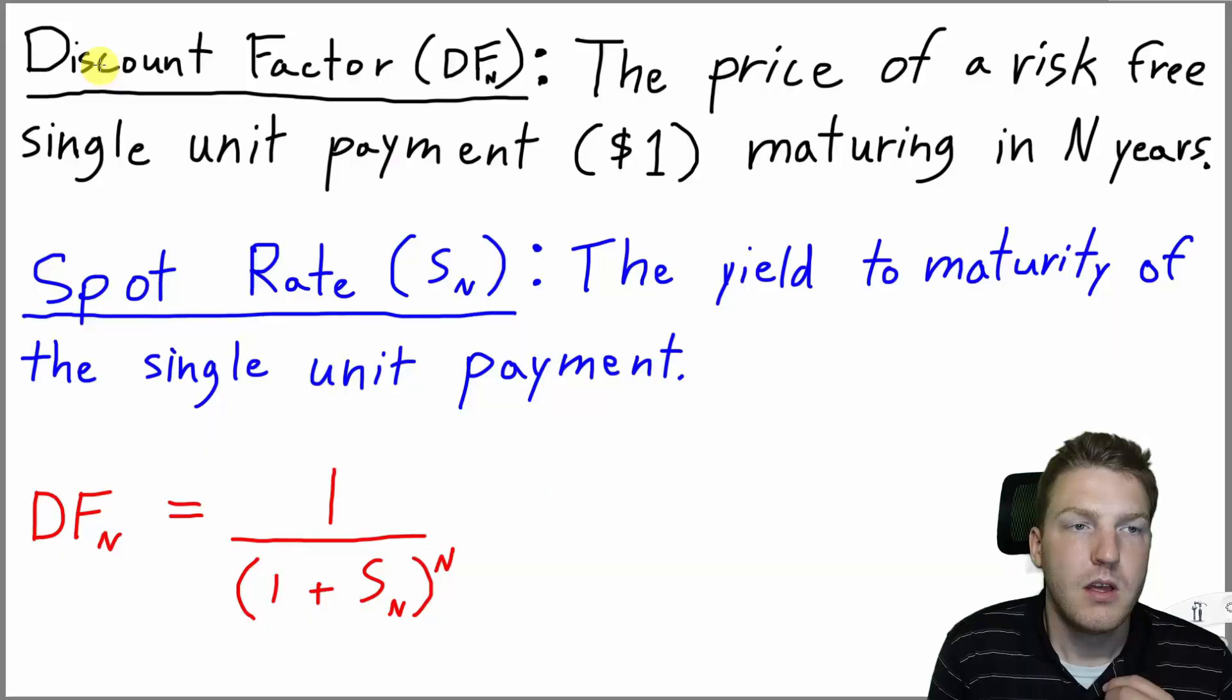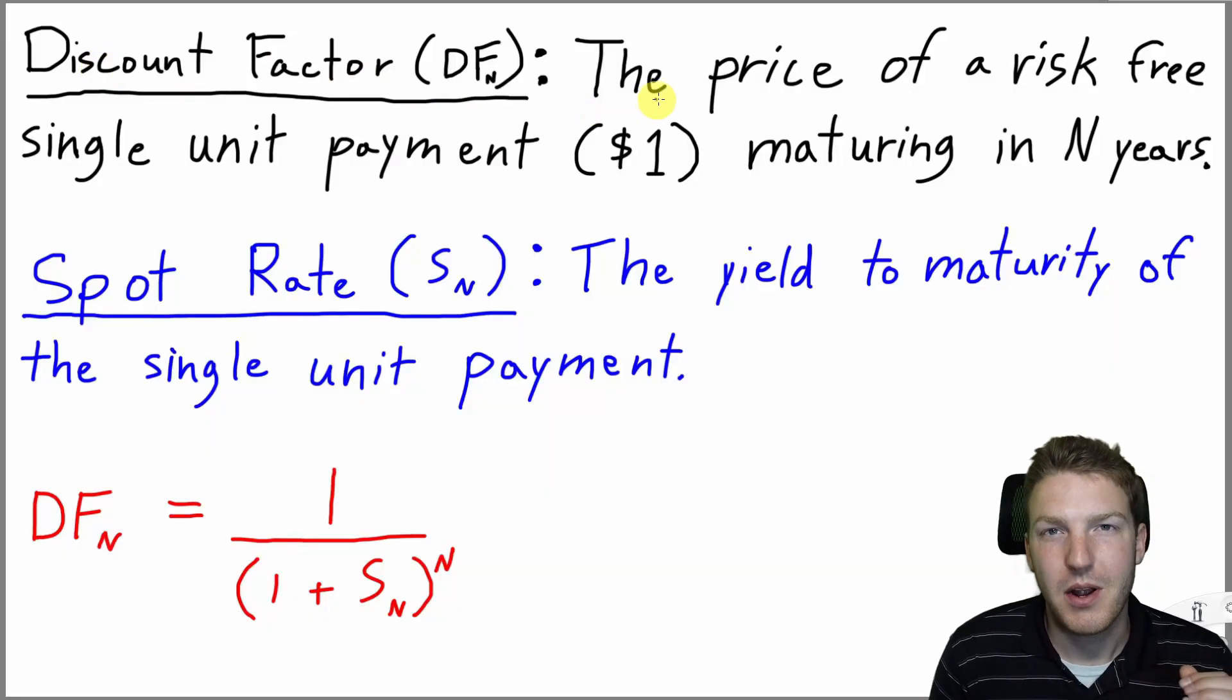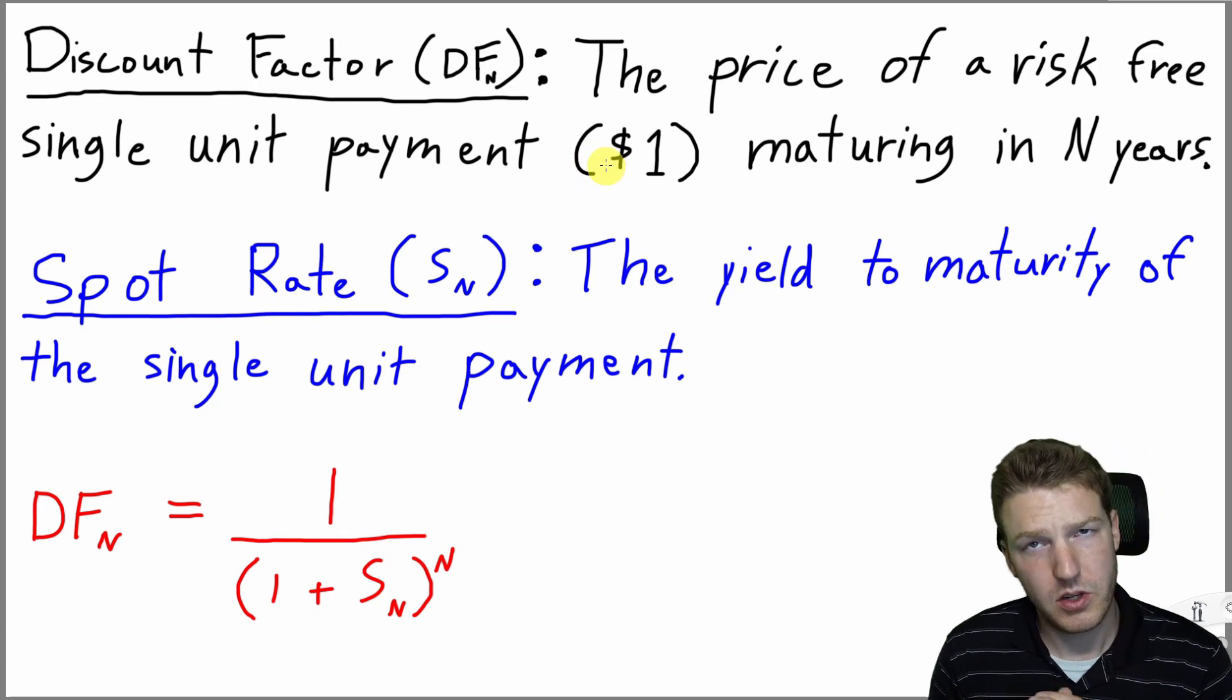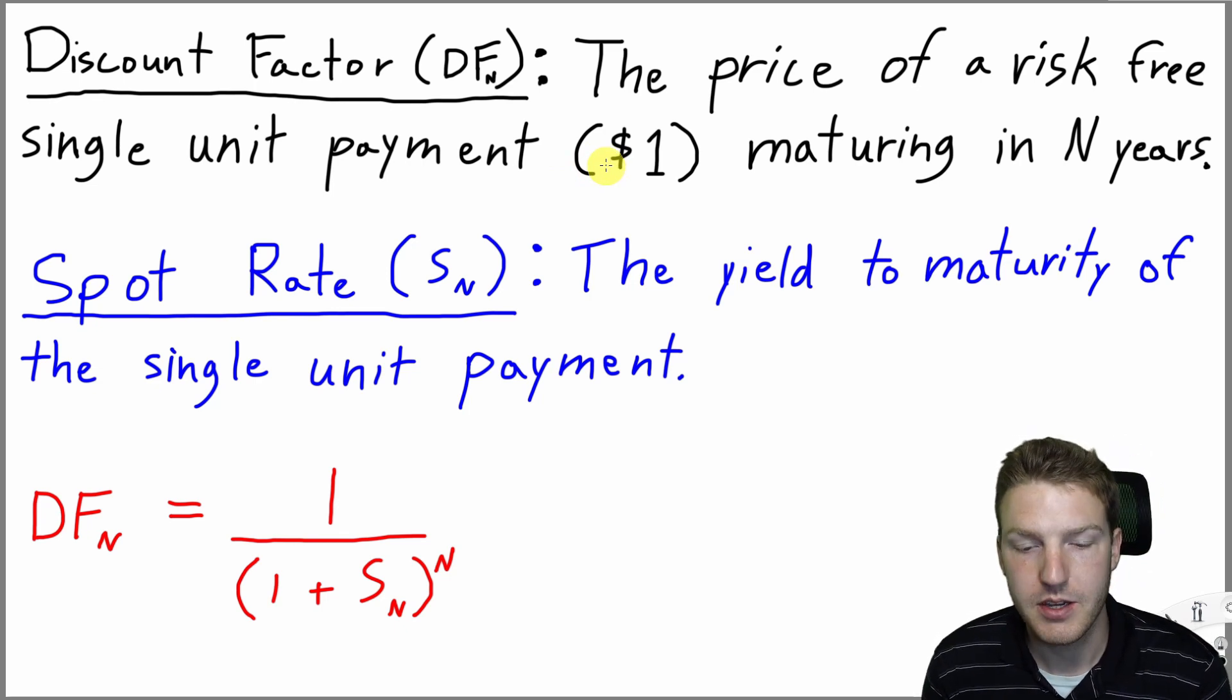Before we get to the more difficult concept of forward rates, let's discuss spot rates and discount factors. A discount factor is the price of a risk-free single unit payment, for example $1, maturing in N years.